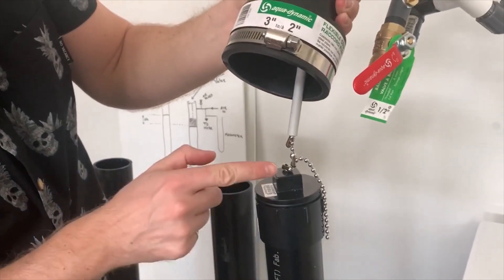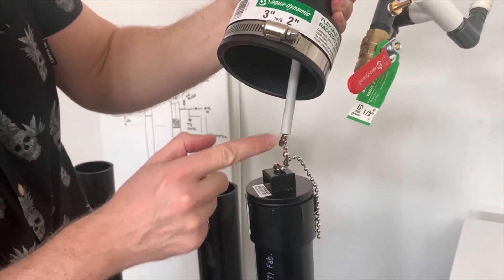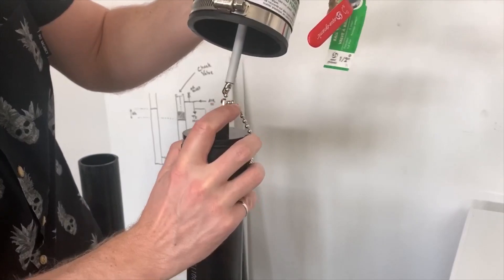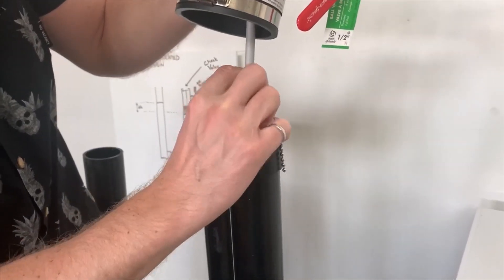Here's the float. You can see I have the chain set to be a very short length right now. The height difference is the travel of the valve plus the length of that chain.